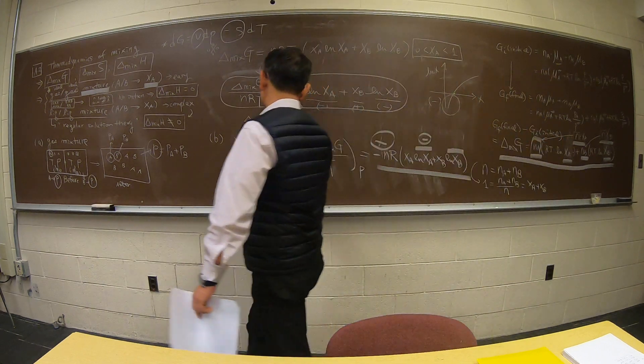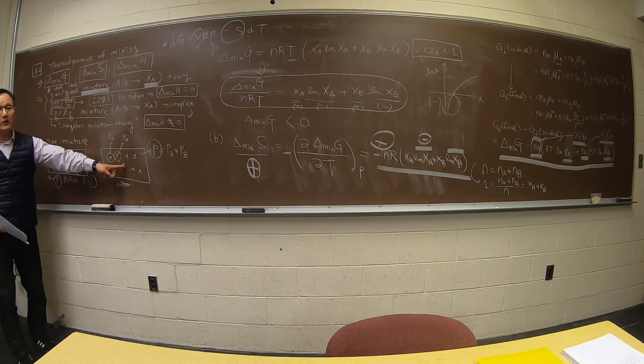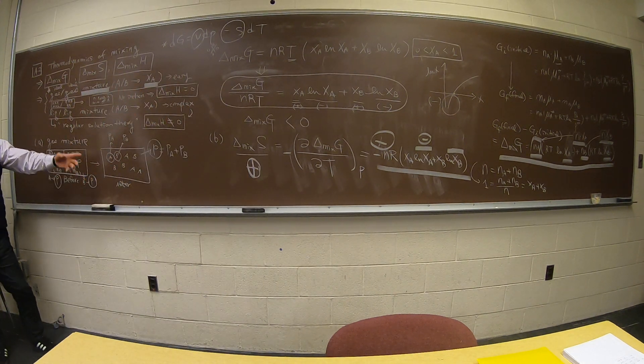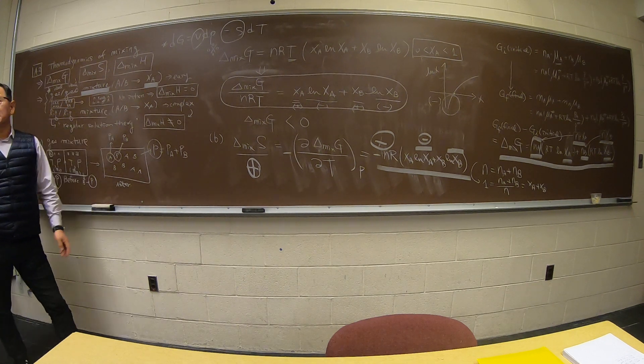So entropy of mixing is always positive. And it makes sense, right? The more chaotic, the more disorder it is, entropy of mixing is going to go up. And delta G mix is over there.